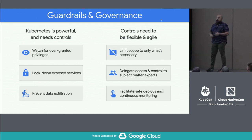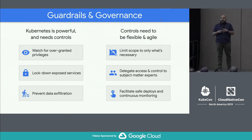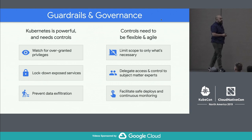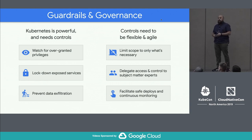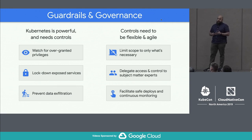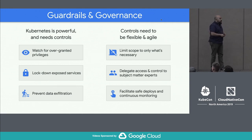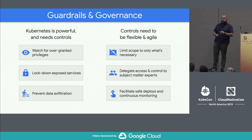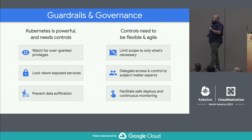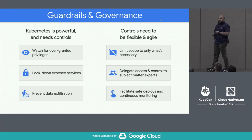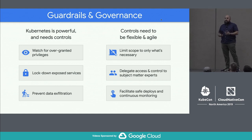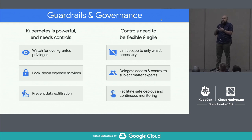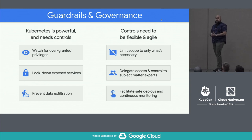The controls we put on to lock things down and exert manageability really do need to be agile and flexible — they've got to be easy to work with, otherwise no one's going to adopt them. You want to make sure the right people are writing these policies: people who have visibility in the services, know the APIs, and understand the software running on there. They should be the ones driving the rules.